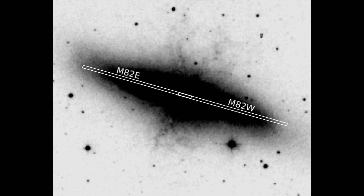We obtained K-band spectra of M82 with the LUCI-1 spectrograph and the Large Binocular Telescope. The setup of our observation is shown in Figure 1 of our paper. This is a digital sky survey image of M82 with overlays of our two slit positions, which we designate as M82-E and M82-W.